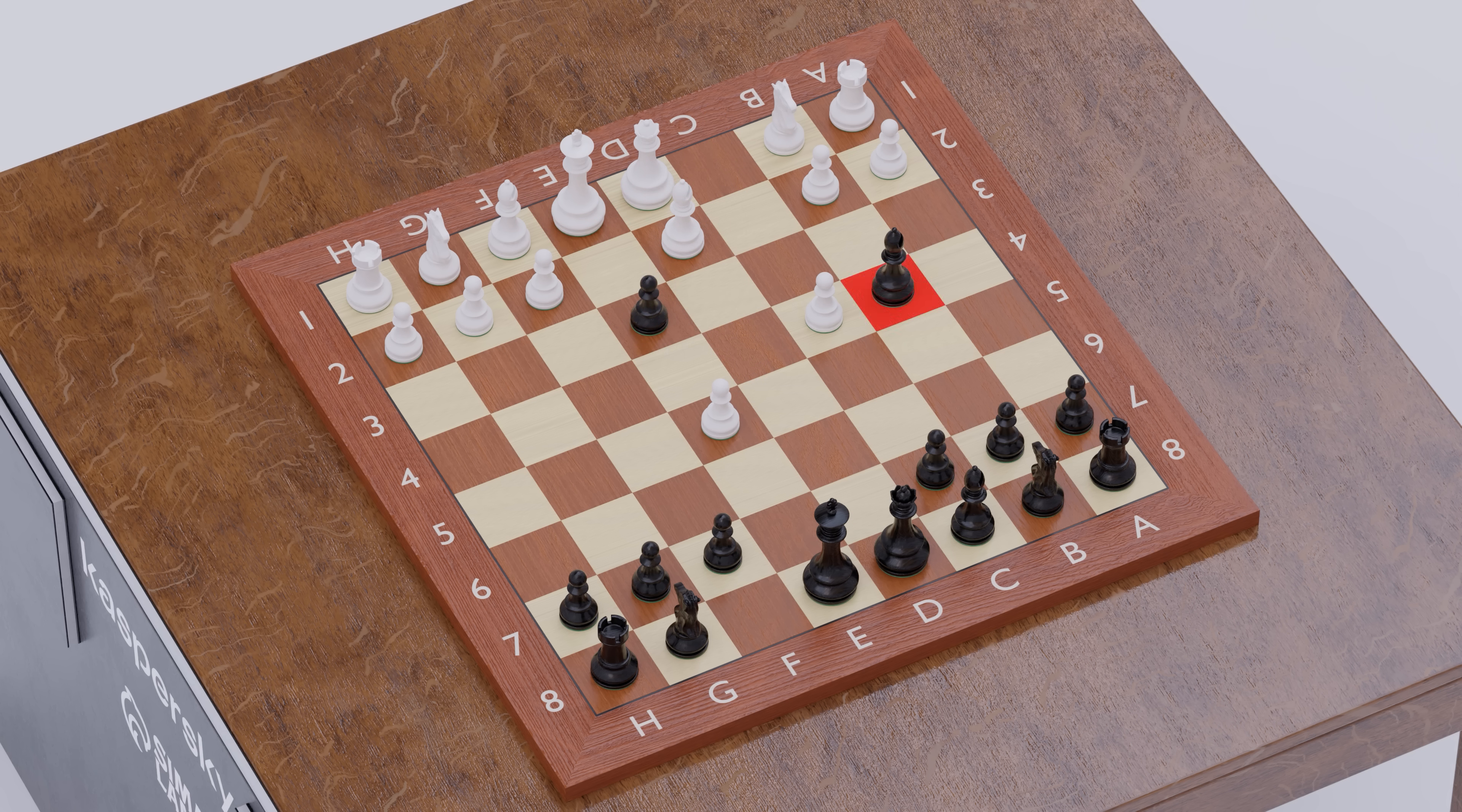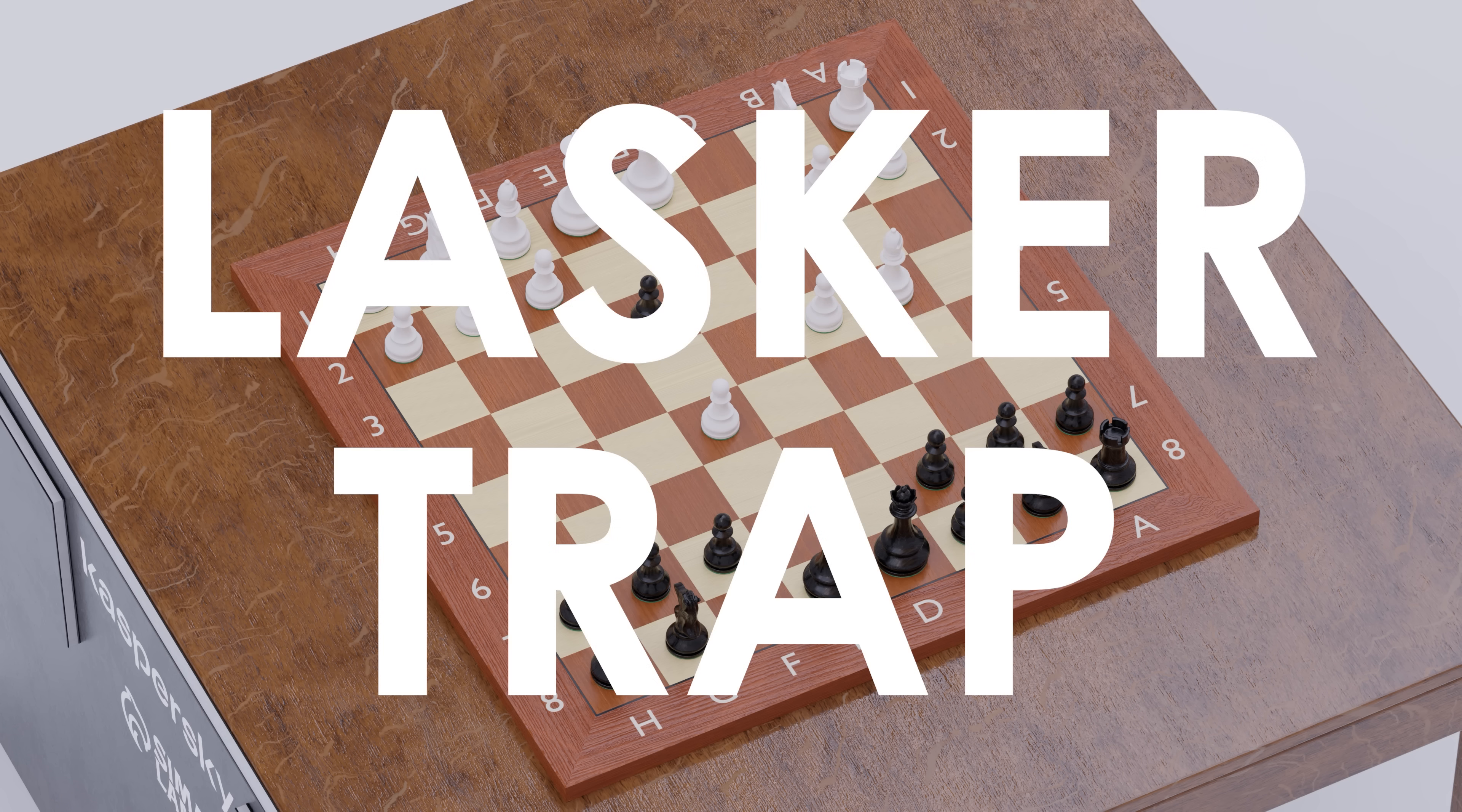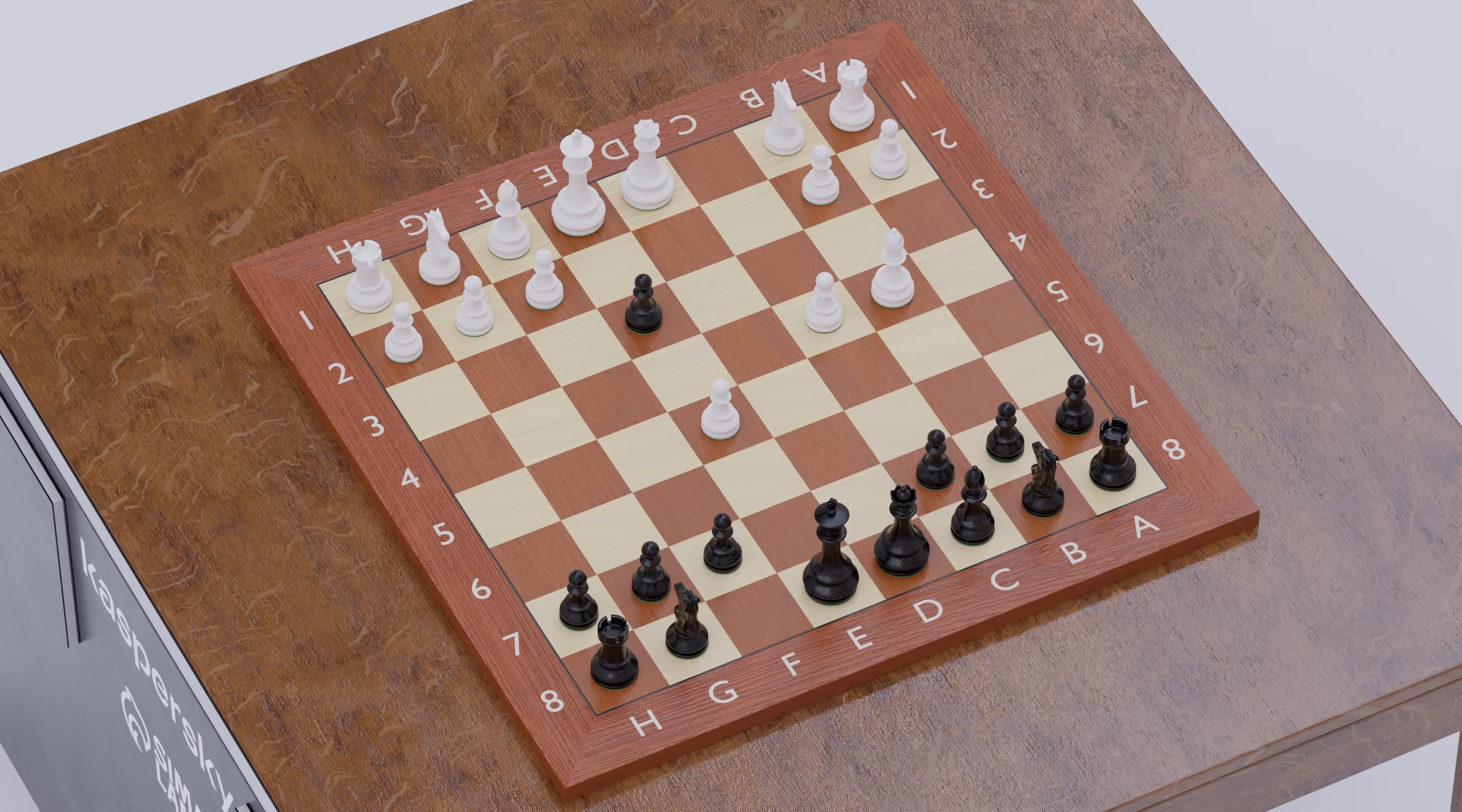It appears that we have hung our Bishop, so White captures. This will be White's final blunder, as they have now entered the Lasker trap. Pawn captures on F2 with check. White cannot capture the pawn without hanging their Queen and is forced to play King E2, allowing our pawn to reach the 8th rank.